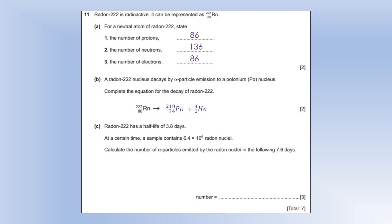Radon 222 has a half-life of 3.8 days. At a certain time, a sample contains 6.4 times 10 to the 6 radon nuclei. Calculate the number of alpha particles emitted in the following 7.6 days. So the key is to realize that 7.6 days is 2 half-lives. So after one half-life, there are going to be 3.2 times 10 to the 6 left. After another half-life, there are going to be 1.6 times 10 to the 6 left. But we want to know the number emitted, so we're going to do our original number minus the number left, which tells us there's 4.8 times 10 to the 6 emitted during that time. And that completes this exam paper.